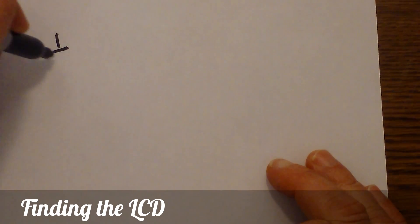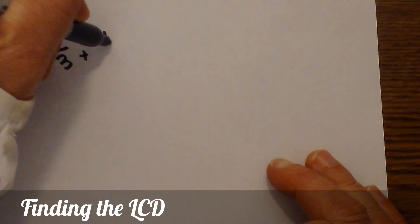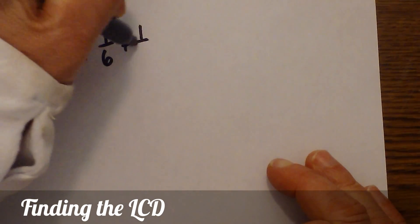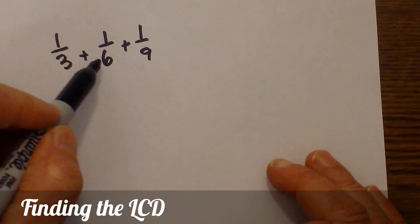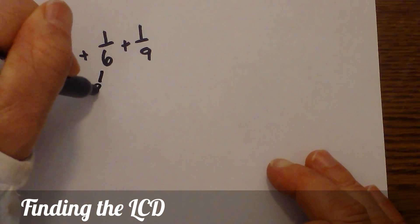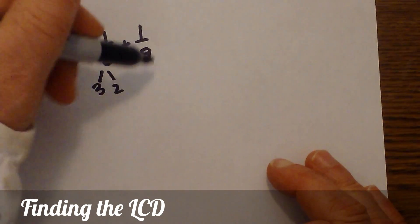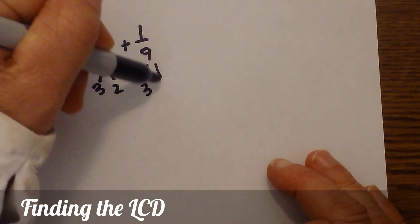I'll go through another example. Say we have 1/3 plus 1/6 plus 1/9. I'm going to do prime factorization: three is prime, this is three times two and they're both prime, and then three times three.